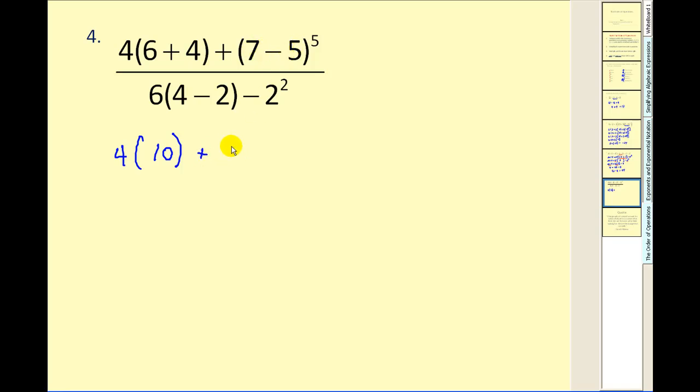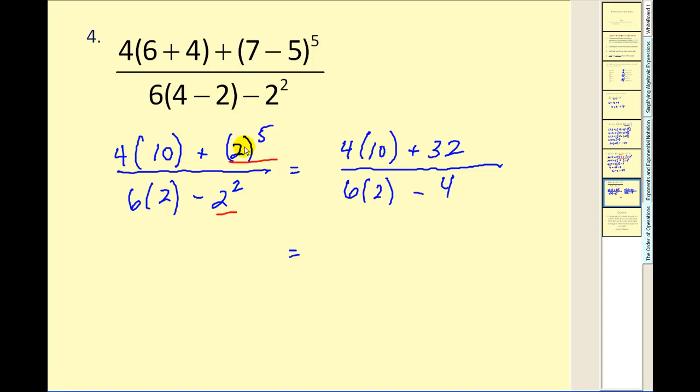Seven minus five is two. In the denominator we have four minus two, which is two. Step two in the order of operations is exponents. So we'll simplify this in the numerator and this in the denominator. Two to the fifth power is thirty-two. Two to the second power is four. We're treating the numerator and denominator as if they were their own problems, and then we'll simplify the fraction at the end.